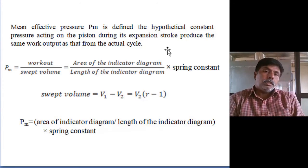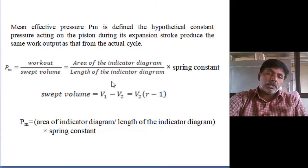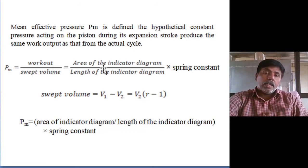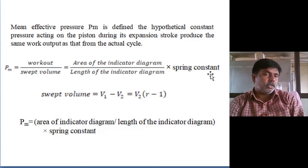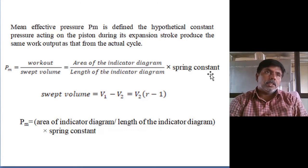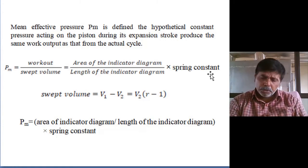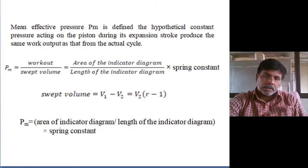Using the indicator diagram, we calculate mean effective pressure as: area of the indicator diagram divided by length of the indicator diagram, into spring constant. We have to follow the units carefully. This is the basic method.